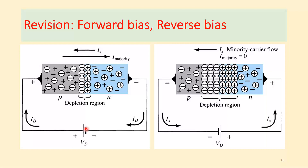With forward bias, the electric field weakens and holes from P go to N while electrons from N go to P. With reverse bias, the internal electric field becomes stronger — it runs in the direction from N to P (from positively charged donor ions to negatively charged acceptor ions). A hole entering the depletion region would move in the direction of the field, while an electron would move in the opposite direction.